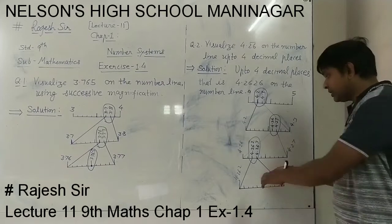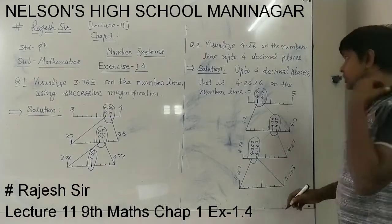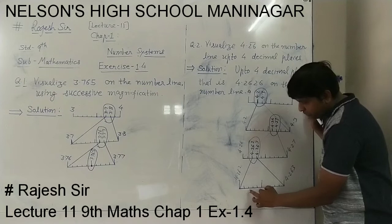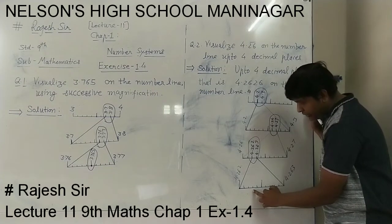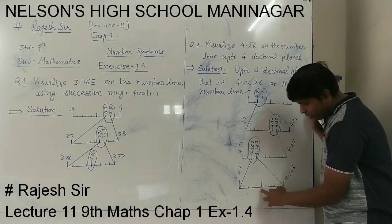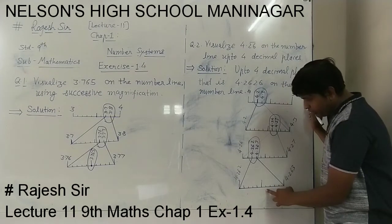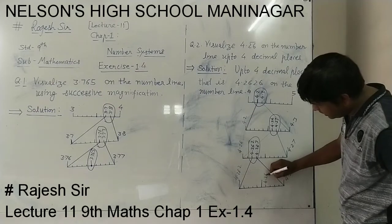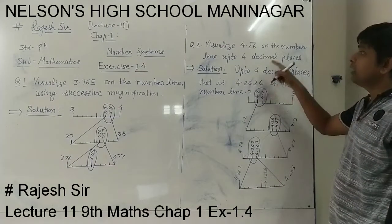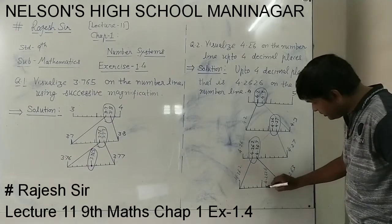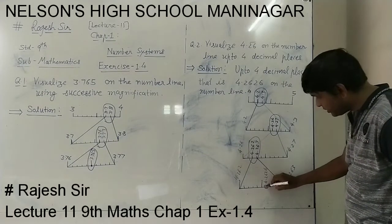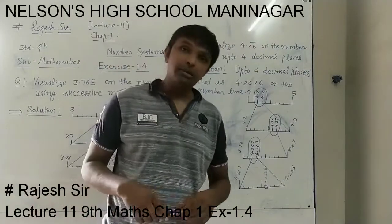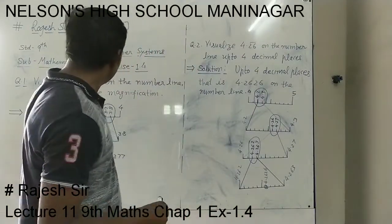Again between these two parts, 10 equal parts are made. Now which number do we want? 4.2626. This is 4.262, this is 4.2621, 4.2622, 4.2623, 4.2624, 4.2625, 4.2626 — this point on the number line is 4.2626, which is asked in the question and we have shown it on the number line. This is the point. This way every real number can be represented on the number line by successive magnification.